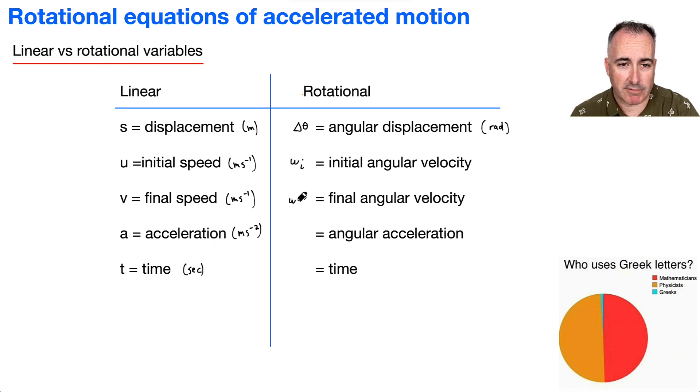And here we're going to have omega f for the final. And instead of meters per second, it's going to be in radians per second. And this one is also radians per second. Well then instead of regular acceleration, we're going to have angular acceleration. We use alpha for that. And it's going to be in radians per second squared.